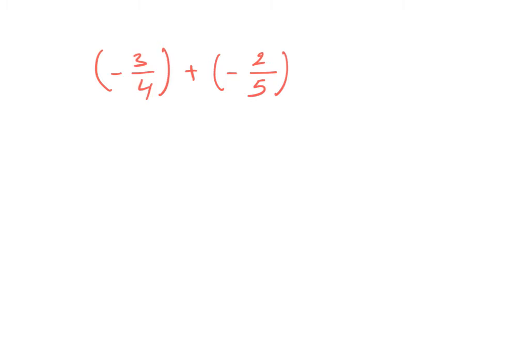We have another example: we're going to add two fractions — negative three over four plus negative two over five. The first thing we have to do is remove the parentheses. We have negative three over four, plus parentheses negative two over five. When we have parentheses with a sign, that's multiplication of the sign — it's like positive one times this. So positive times negative is negative, and we change this to negative two over five.